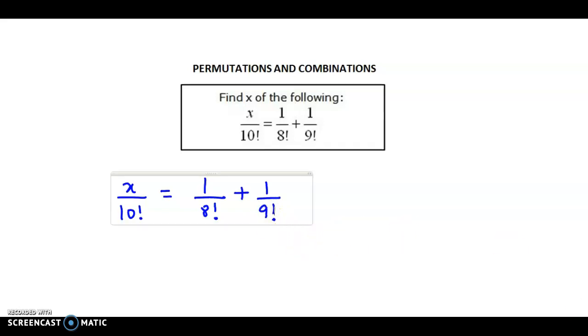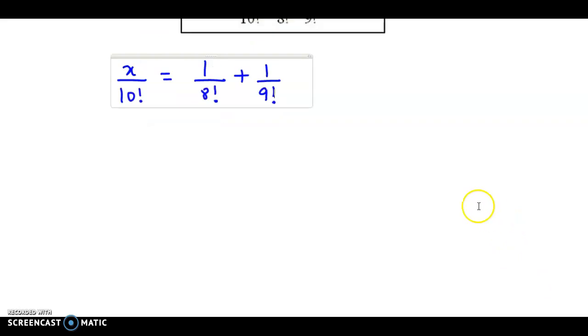If you observe the two factorials on the right-hand side, that is 8 factorial and 9 factorial, this could be easily transformed into 10 factorial. Let us do that.